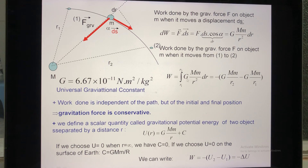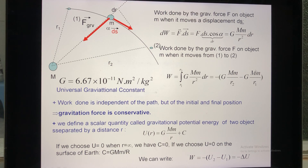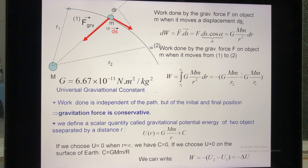Taking a look at the result, G, M (capital), and m (small) are constants, so you focus on R. Integrating over R squared gives you this formula. Based on this formula, people define and call this quantity potential energy. This term is the potential energy at position R2, and this term is the potential energy at position R1.